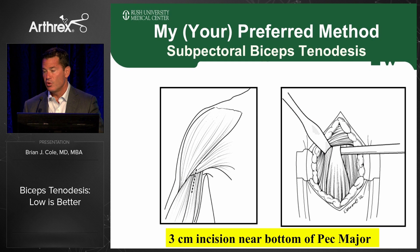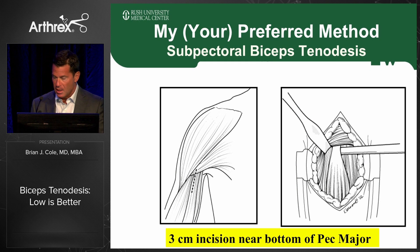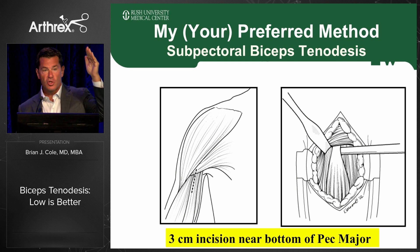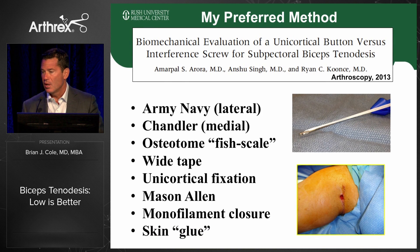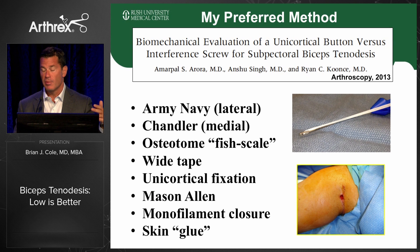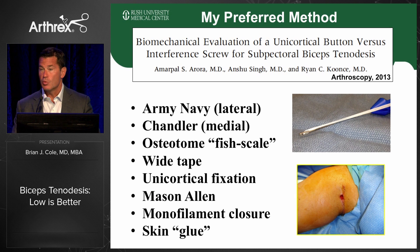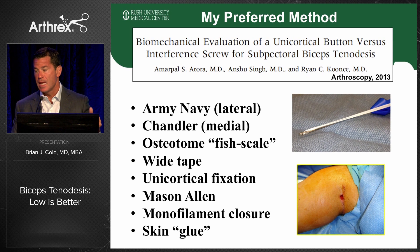My preferred method is straightforward. You make a small incision right in the axillary crease — with the arm internally rotated, you can see the crease clearly, usually about three centimeters at most. We go right down to the medial border of the deltoid at the deltopectoral junction, place an Army-Navy retractor under the pec, lift up, and the tendon is right there. If you're having trouble seeing it, track the medial border of the pec with a curved hemostat and you'll find it covered in a layer of synovium. I place an Army-Navy retractor laterally, then a Chandler retractor, take an osteotome to fish-scale the humerus, and use wide tape in a Mason-Allen configuration for unicortical fixation. For wound closure I only use monofilament sutures — 3-0 Monocryl — then Dermabond over the surface without Steri-Strips, as combining those can cause issues. The location is prone to P. acnes colonization and post-operative sweating and maceration.